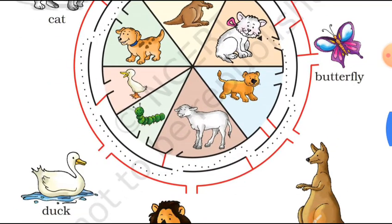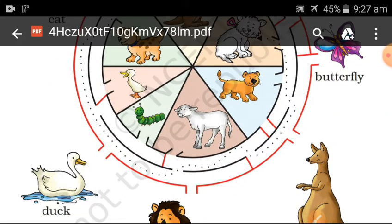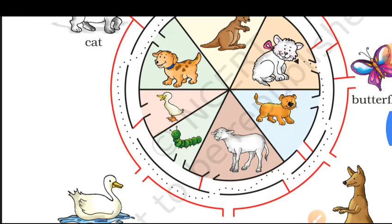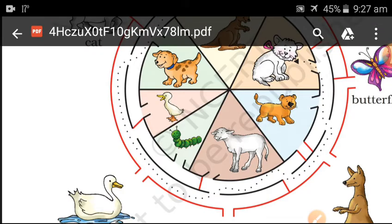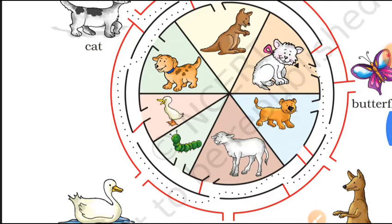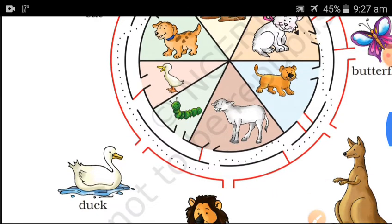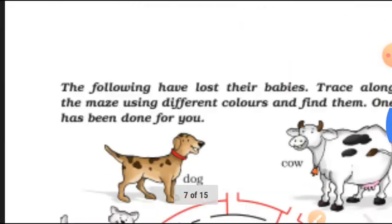Butterfly ke bacche ko caterpillar kehte hain. Duck ke bacche ko duckling kehte hain. Lion ke bacche ko cub kehte hain. Kangaroo ke bacche ko joey kehte hain.